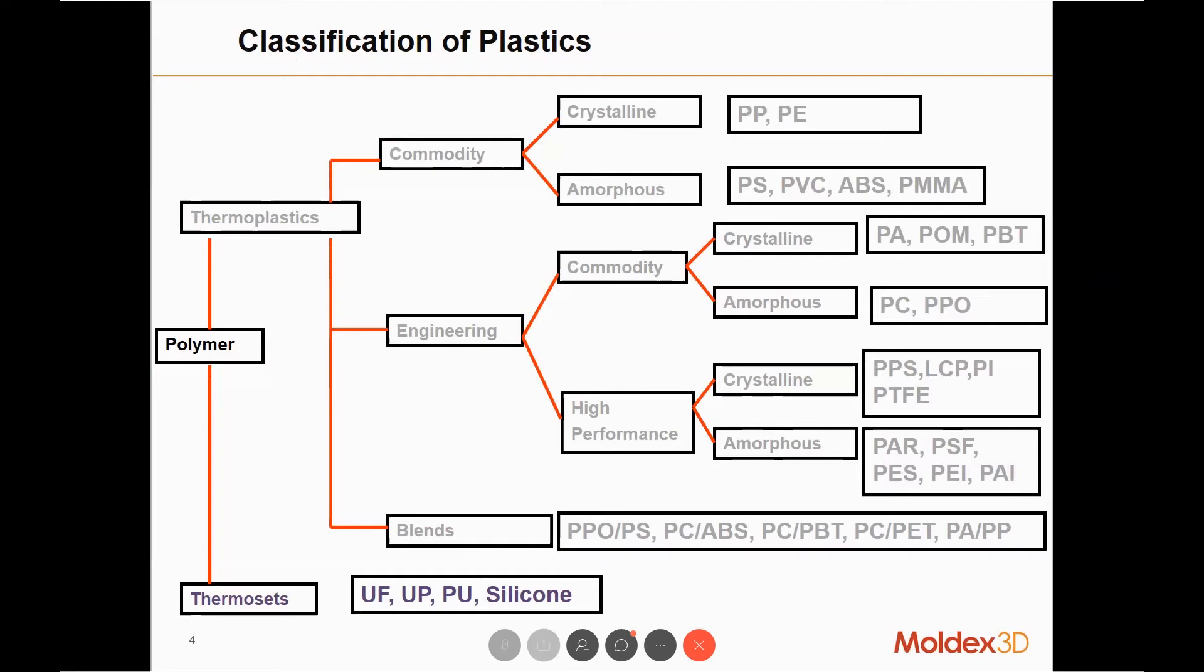They're used in many different applications like the automobile industry, aerospace industry, and medical field. For thermoplastics, we commonly see PP, PC, PA, ABS, and polymer blends. For example, PC and ABS are sometimes seen in suitcases when we travel.